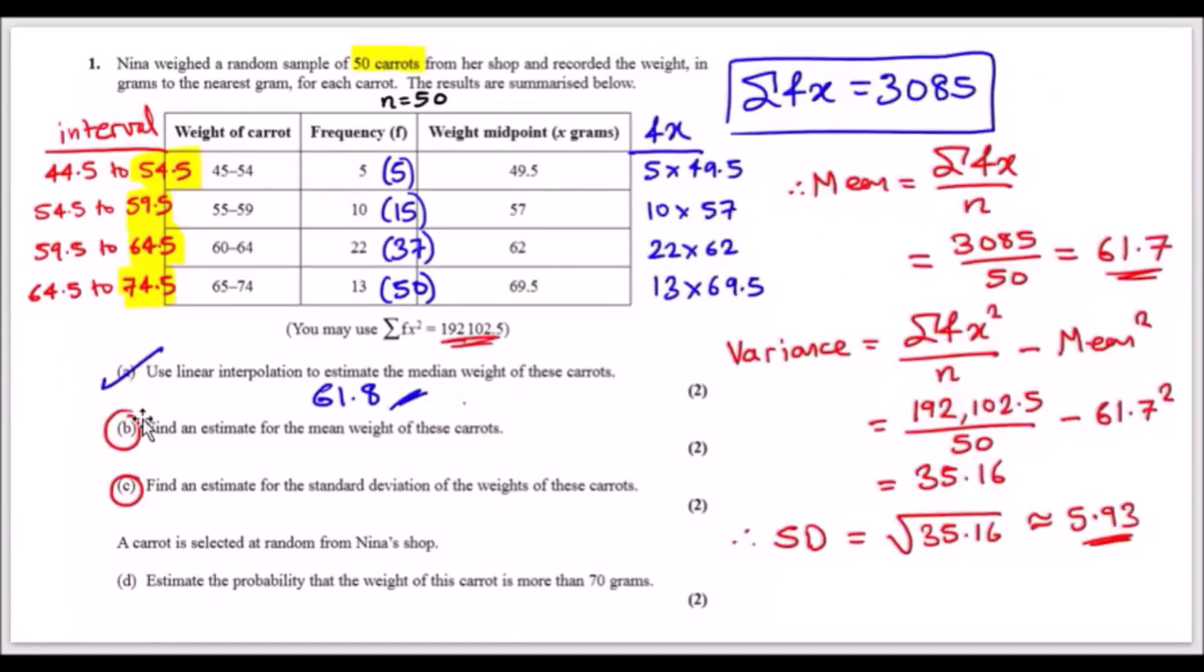Part b: find an estimate for the mean weight of these carrots. To find the mean weight, work out what fx is because they only gave us the sum of fx squared, which is useful for part c. To get fx, it's just frequency times x, which is 5 times 49.5. You do each one, then find the sum. When you add all these up, you get the sum of fx, which is 3085. To calculate the mean, it's simply the sum of that over n, which is 50. You get 61.7.